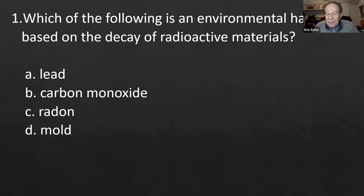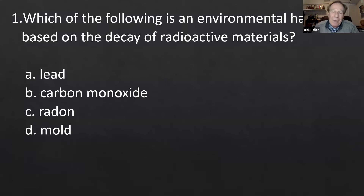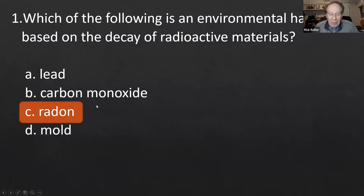Okay, number one: which of the following is an environmental hazard based on the decay of radioactive material? The options are: lead, carbon monoxide — that's a killer, let's hang onto that — C: radon, and D: mold. The answer is C, radon. Radon comes from a breakdown of radioactive material.